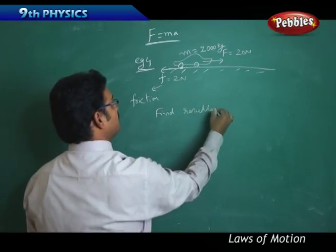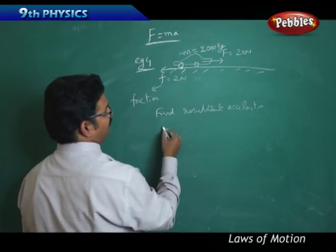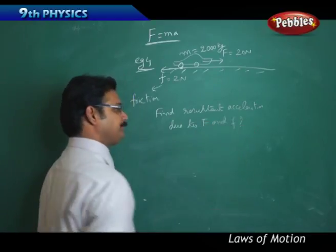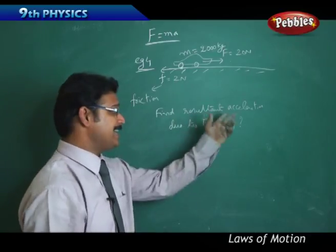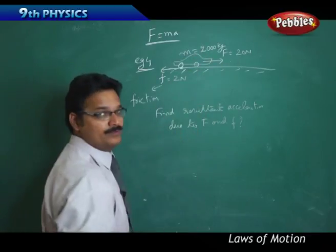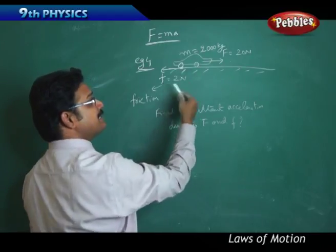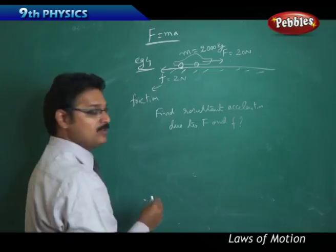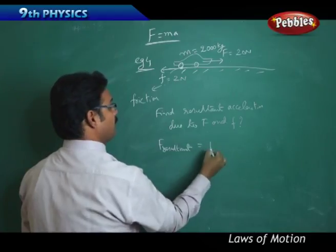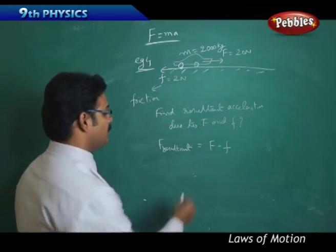Find resultant acceleration due to F and small f. Why I said resultant acceleration? Because this car is not experiencing just 20 Newton, it is experiencing two forces: F and small f. Therefore, the resultant force is capital F minus small f. Why I have subtracted? Because this force is opposite to that force. So the resultant force is 20 Newton minus 2 Newton, which is 18 Newton.